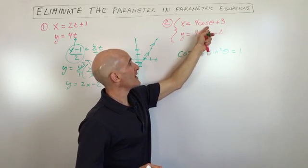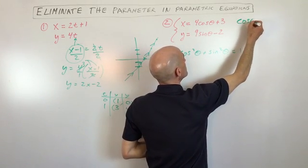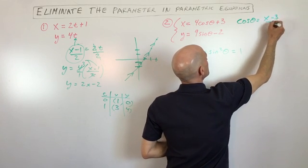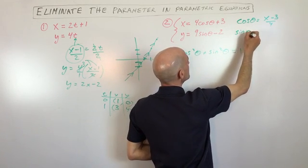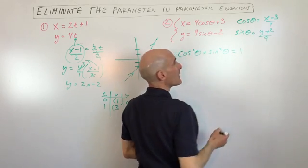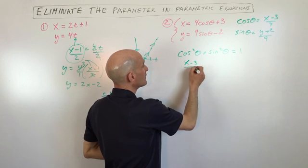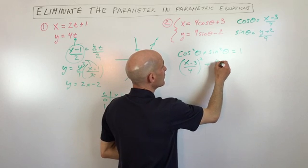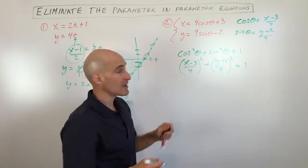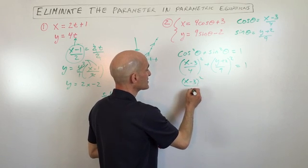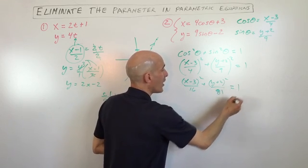We solve for cosine and sine separately. In the top equation, subtract 3 and divide by 4 to get cosine θ equals (x minus 3) over 4. In the bottom equation, add 2 and divide by 9 to get sine θ equals (y plus 2) over 9. Substituting into the identity gives [(x minus 3)/4]² + [(y plus 2)/9]² equals 1, which simplifies to (x minus 3)² over 16 plus (y plus 2)² over 81 equals 1.